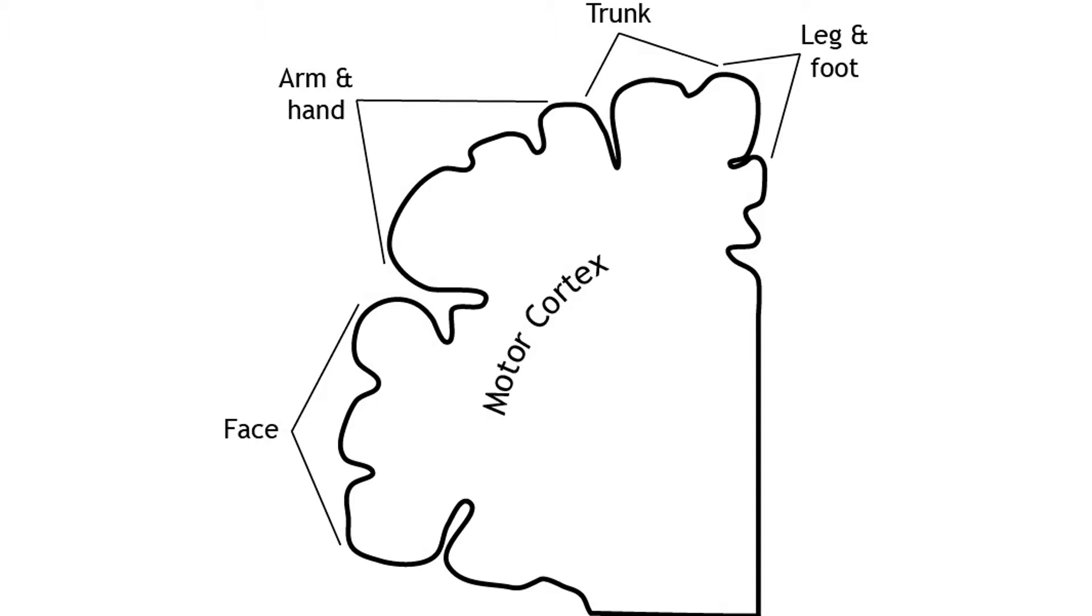It is believed that upper motor neurons in the motor cortex control multiple lower motor neurons in the spinal cord that innervate multiple muscles. This results in activation of an upper motor neuron causing excitation or inhibition in different neurons at once, indicating that the primary motor cortex is responsible for movements and not simply activation of one muscle.